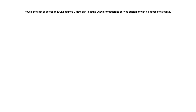Next question: is there any difference in using random values for imputation of values below LOD versus simply using LOD/2? Yes, there is a difference. Fixed values do not properly represent the variance within the dataset and may reduce the statistical power of the test. Random values, on the other hand, maintain the variance in the data and therefore give more statistical power.